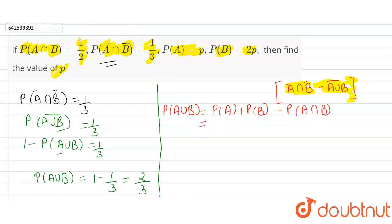We will put the values here: P(A) equals p, P(B) equals 2p, minus 1/2, and we have found that this equals 2/3.